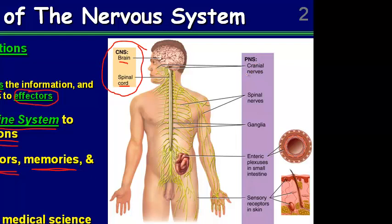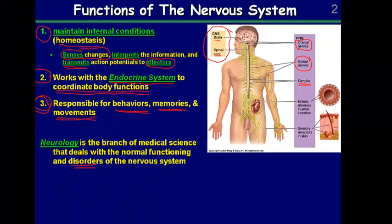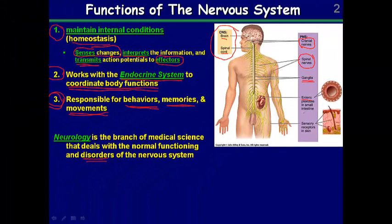Within the PNS we're looking at nerves. Cranial nerves go to and from the brain; spinal nerves go to and from the spinal cord. Ganglia, which we'll talk more about later in the semester, are basically masses of nervous tissue that produce a kind of swelling. There's also an enteric nervous system which controls your GI tract like the small intestine. We also have sensory receptors in the skin monitoring our external environment. These are all things we'll be touching on.